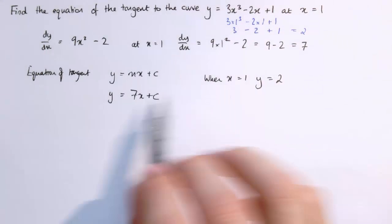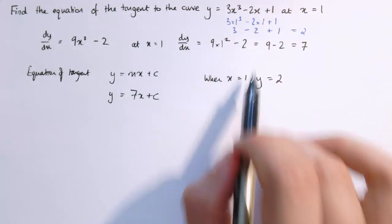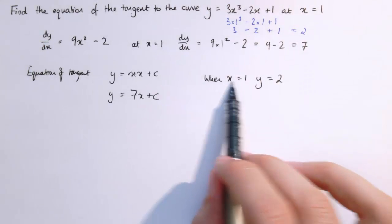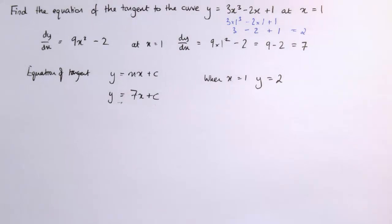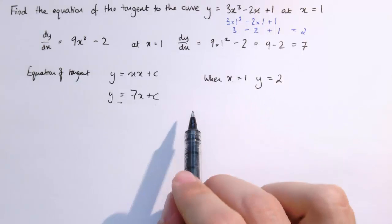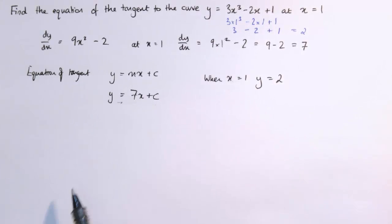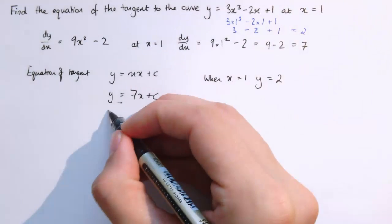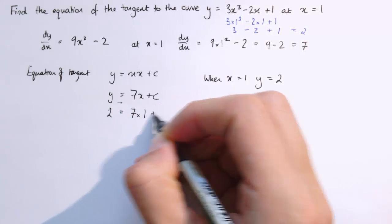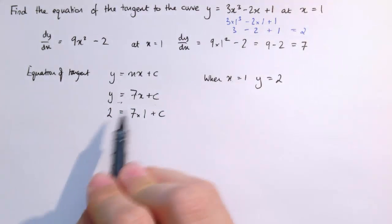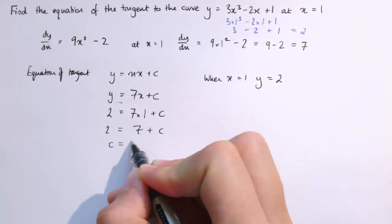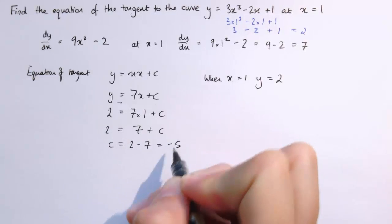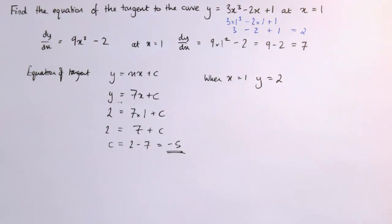We know that point lies both on the curve and on this tangent line. If I substitute x equals 1 and y equals 2 into this formula, this will be a pair of coordinates that satisfies it. So 2 equals 7 plus c, therefore c equals 2 minus 7, which equals minus 5.